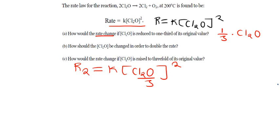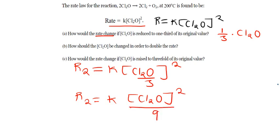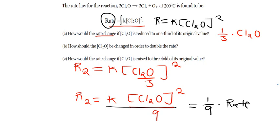So R₂ reduces to K times C₂O squared over nine, since three squared is nine. The easiest way of answering these questions is by maintaining the right-hand side. The only thing making it different is the nine. If you observe clearly, the top part is equal to the rate itself, so you can pull out the one over nine and get back the rate. Therefore, the rate would change to one ninth of the initial rate — that's the answer.